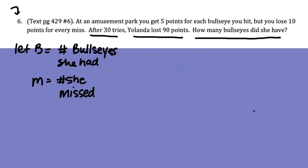When we write these systems, remember I said to you that one equation normally relates to the amount of things she did. So she took 30 tries at either hitting the bullseye or not hitting the bullseye, playing the game. So that would be B plus M equals 30.